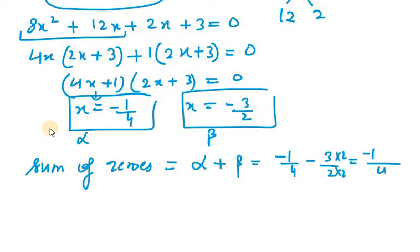we get minus 1 minus 6. Minus 1 minus 6 makes minus 7 over 4.